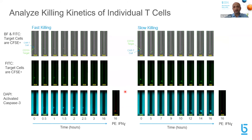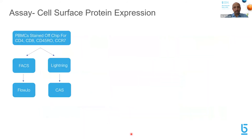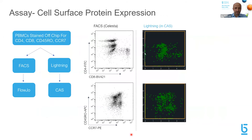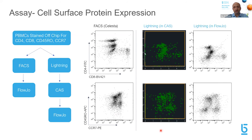You can selectively export these cells for next-generation sequencing and look at the differences. Measurement of cell surface proteins in this example correlates with FACS data. The CAS cell analysis suite software that comes with the Lightning system shows very nice correlation, and data can be exported from CAS into FlowJo because it uses common formats — CSV, FCS, or FlowJo format — which can be visualized in FlowJo to confirm the correlation.